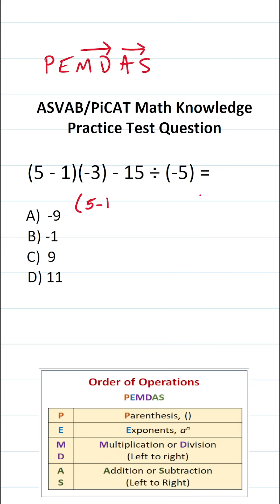On the ASVAB and PiCAT, you're not permitted to use a calculator or a reference sheet. And for that reason, I recommend you get in the habit of copying things down and working them out on your own scratch paper.